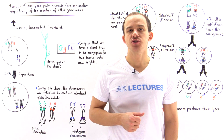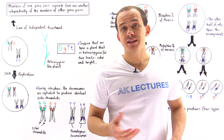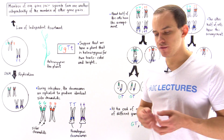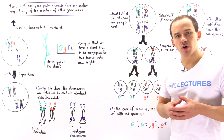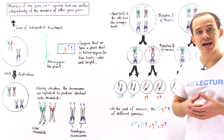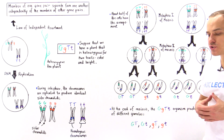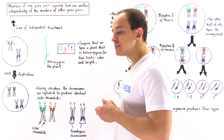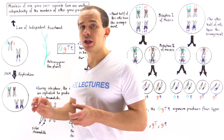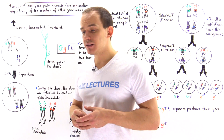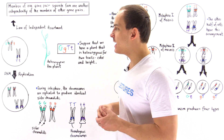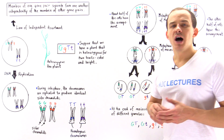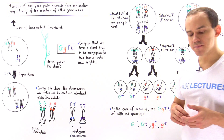So far in our discussion on Gregor Mendel's Principles of Inheritance, we focused on Mendel's Law of Segregation. Now we're going to move on to the second law devised by Gregor Mendel, known as Mendel's Law of Independent Assortment.